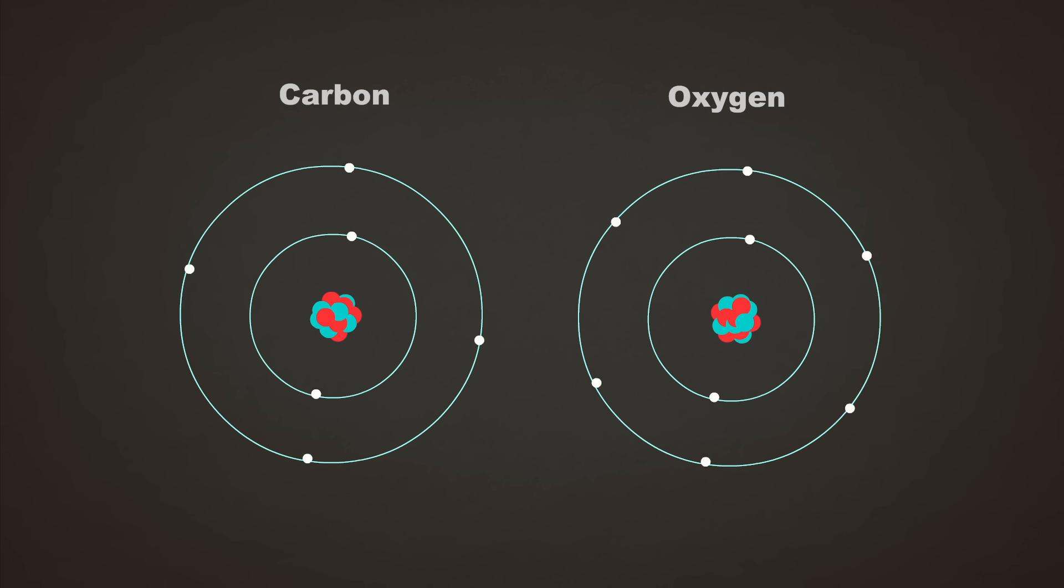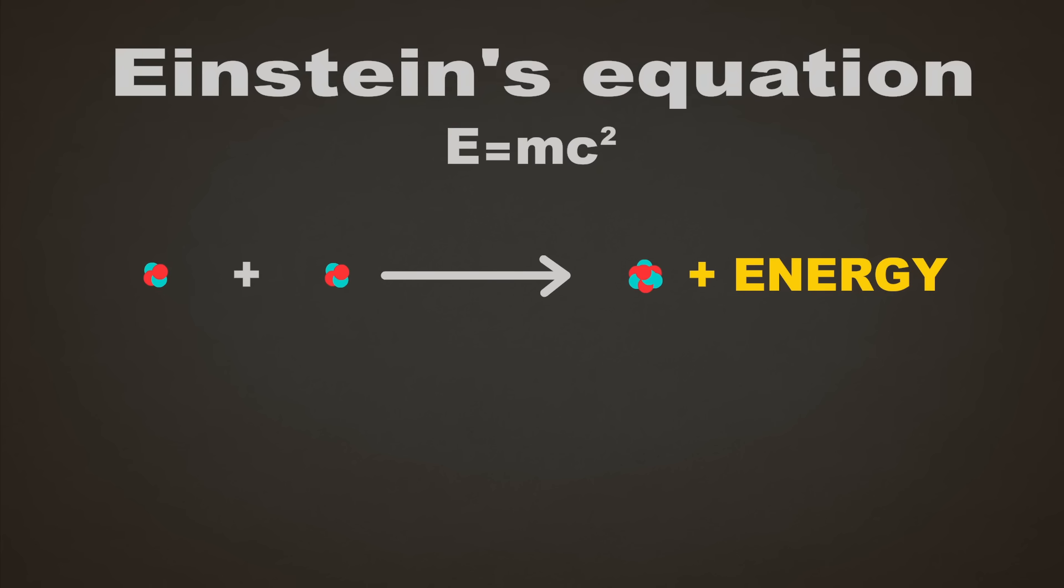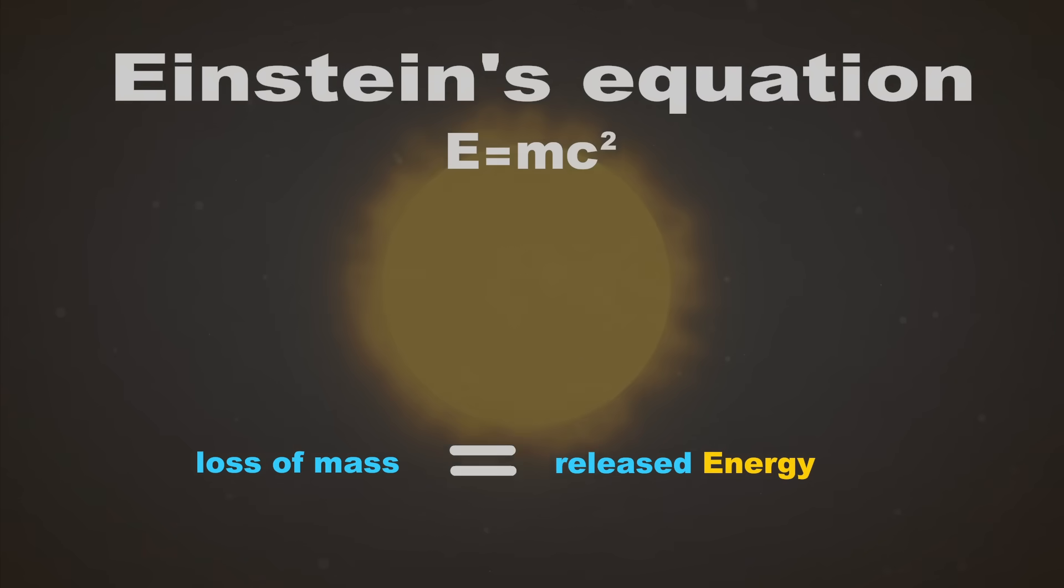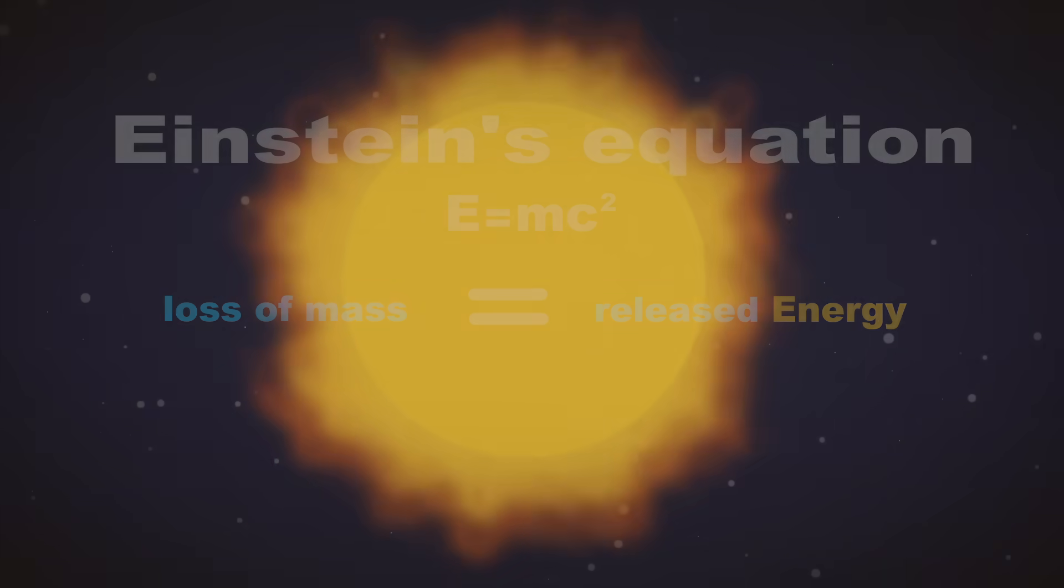At first glance, these reactions may look like they're breaking the law, because they release an astounding amount of energy, seemingly out of nowhere. However, thanks to Einstein's famous equation, we know that energy is equivalent to mass. It turns out that the total mass of the starting atoms is very slightly more than the mass of the products, and that loss of mass perfectly corresponds to the gain in energy, which radiates out from the star as light, heat, and energetic particles.